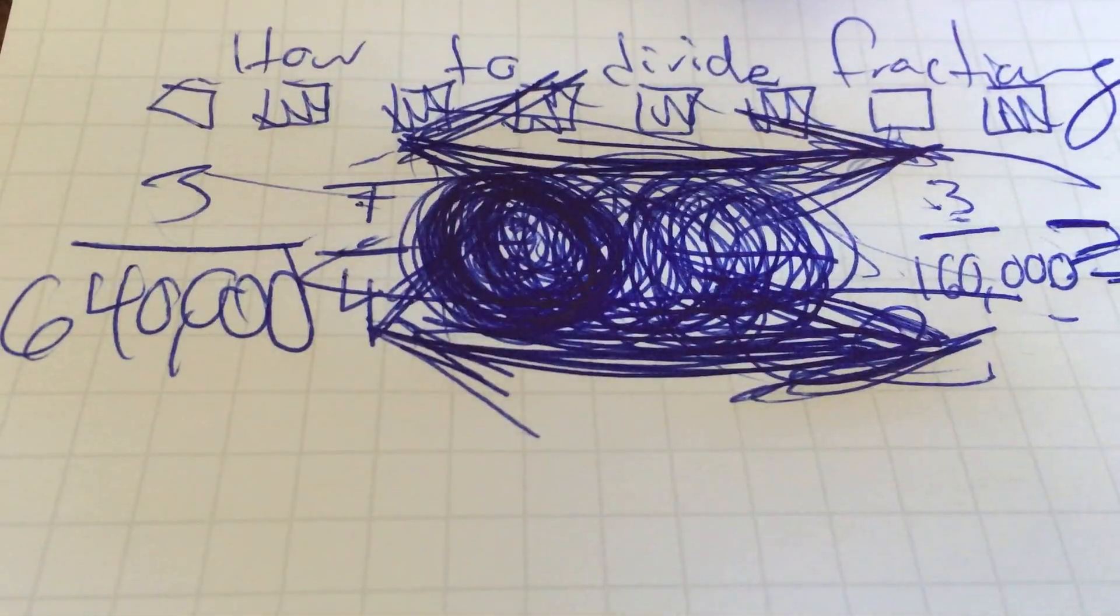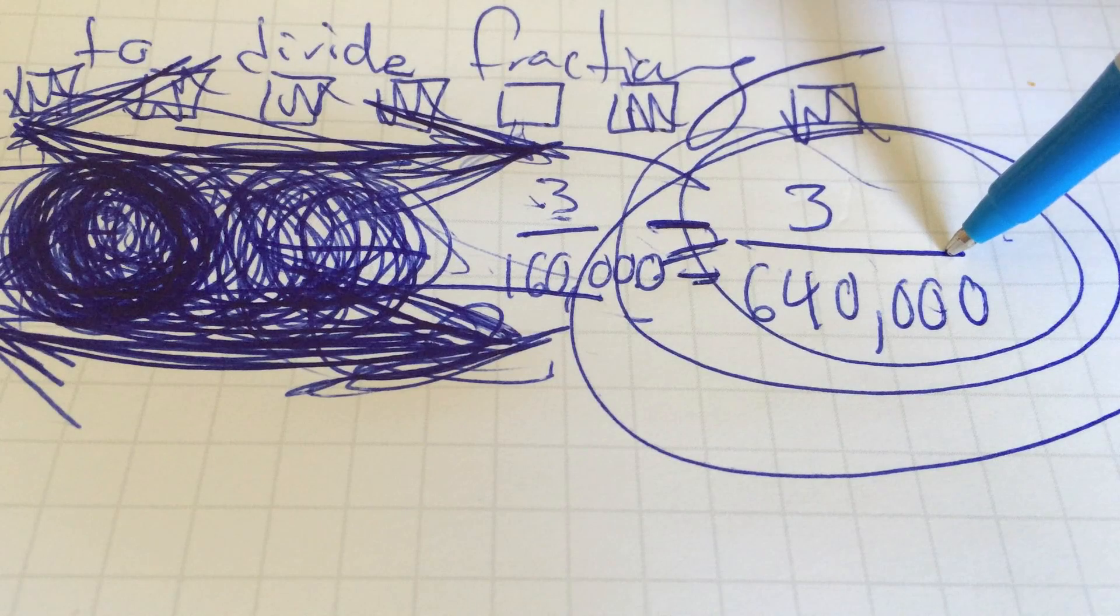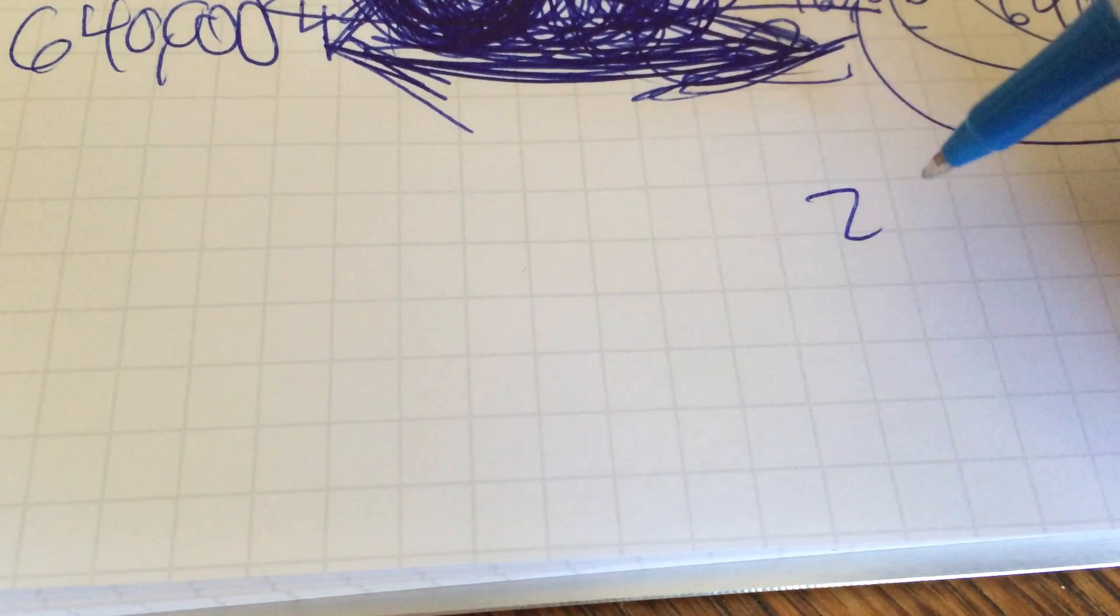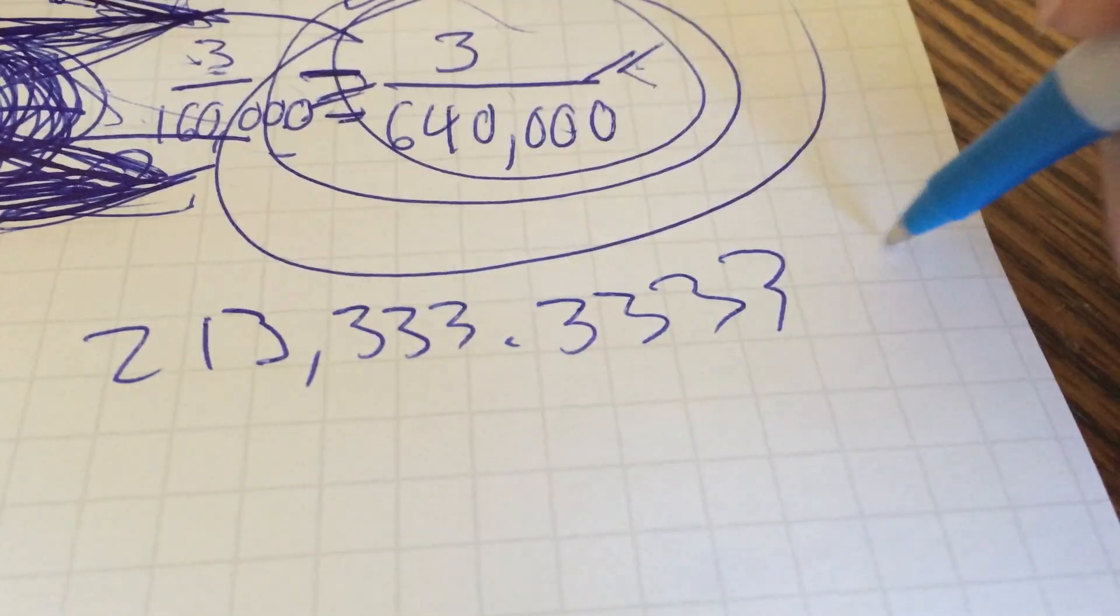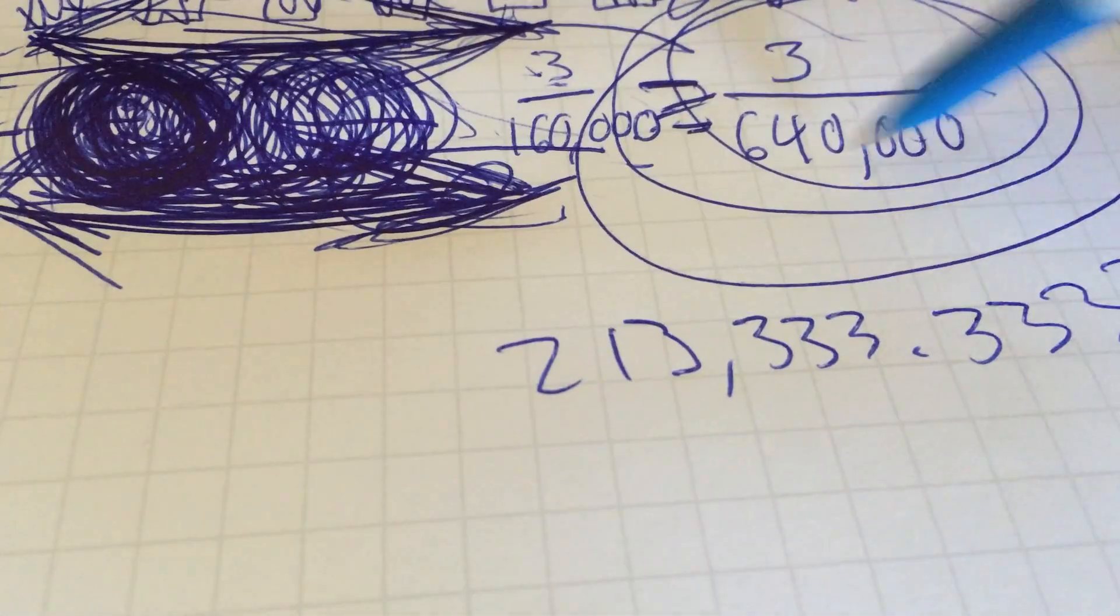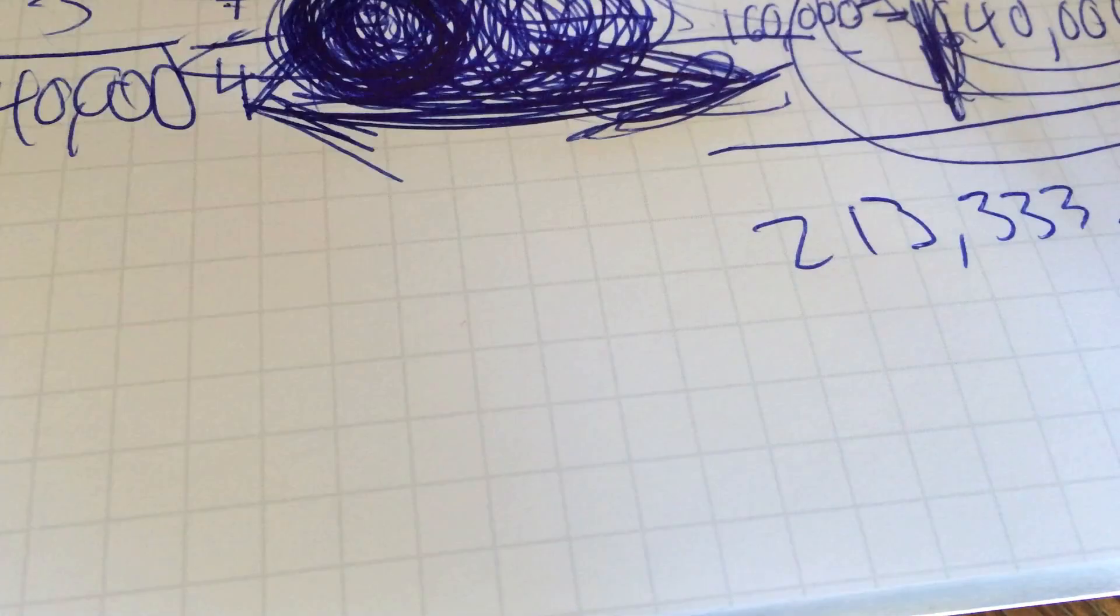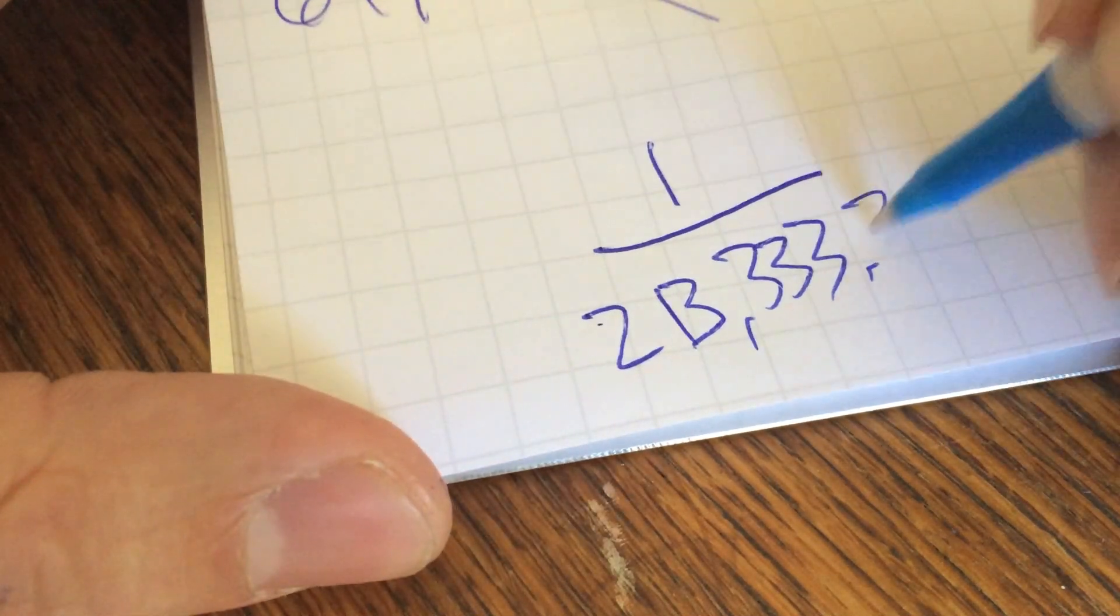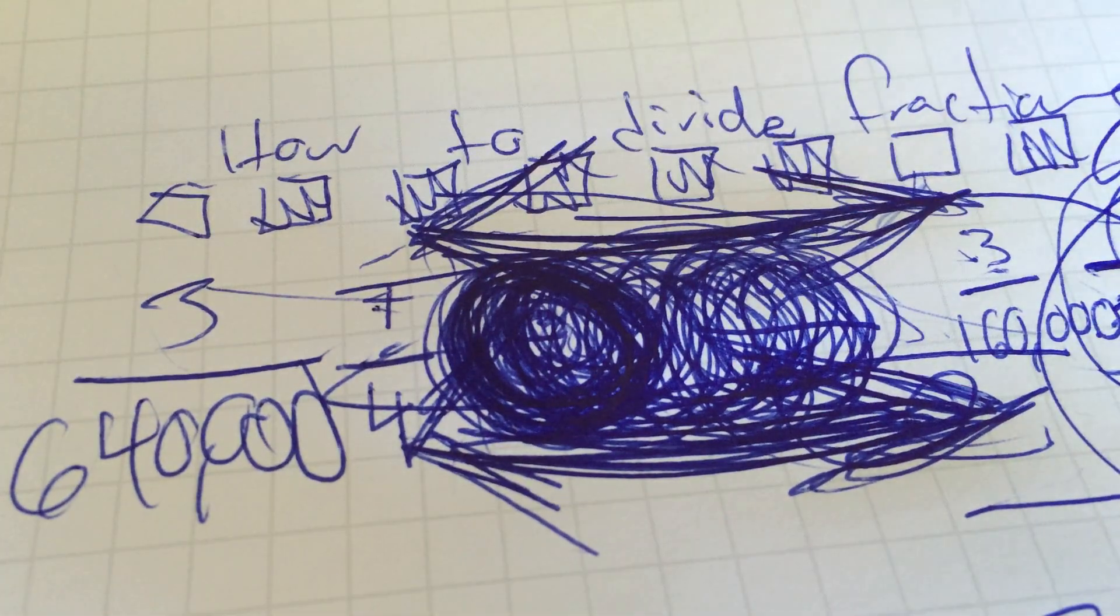Now, like all good mathematicians, we're going to want to reduce this to its lowest common denominator, which means dividing 640,000 by 3, which is 213,333.333, on into infinity. And then the top one is going to be number 1. So the answer is 1 over 213,333.333, on and on for infinity.